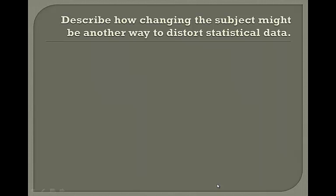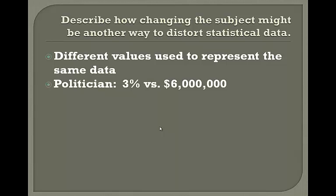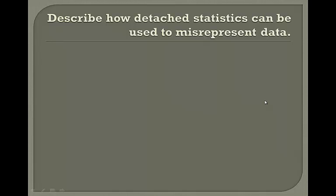Changing the subject is another way to distort statistical data by using different values to represent the same data. For example, one politician says spending only increased by 3%, and the other says he increased spending by $6 million. The $6 million sounds like a whole lot, but out of the whole budget it's only 3%. That's how you can use different kinds of representation.